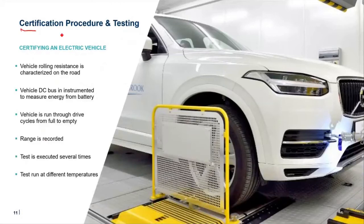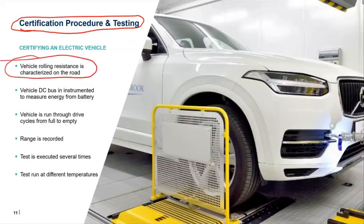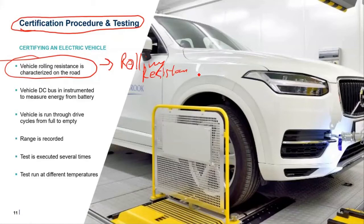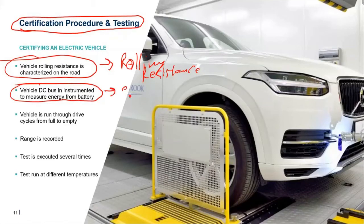The certified range test — remember, this is the one the government does. We need to characterize the vehicle's rolling resistance. We take the vehicle out, spin it up to a certain speed, put it in neutral, and coast down to see how friction and air resistance affect it. We then instrument the vehicle DC bus. If you have one battery, we measure one voltage and current and therefore one energy. If you have two batteries, we measure both. We're looking at how much energy the vehicle uses — we don't care about components, just vehicle level: how much energy used, how far did we go, efficiency, and range.